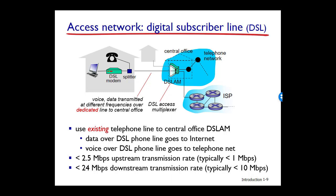The DSL standards define different transmission rates for downstream and upstream. Because the downstream and upstream rates are different, the access is said to be asymmetric. The DSL provider may purposely limit a residential rate when tiered service — different rates available at different prices — is offered. There may also be differences because the maximum rate can be limited by the distance between the home and the central office, the gauge of the twisted pair line, and the degree of electrical interference. If the residence is not located within five to ten miles of the central office, it must resort to an alternative form of internet access.